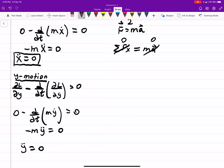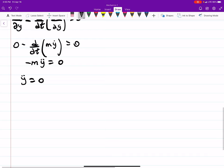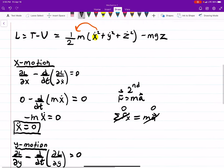Now in the Z-direction, there is a force. There's a force due to gravity. So we're expecting an acceleration there. So that's our third and final equation of motion. DL by DZ minus D by DT. DL DZ dot equals zero.